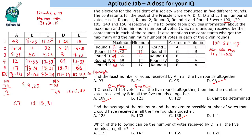Which of the following can be the number of votes received by D in all 5 rounds together? D's range is 121 to 164. Any values outside this range are invalid. The answer is 143, as it falls within the valid range.